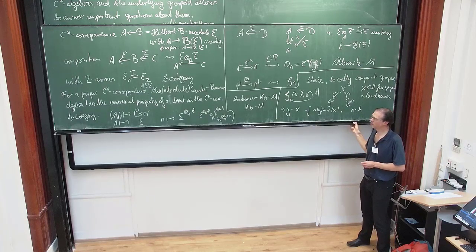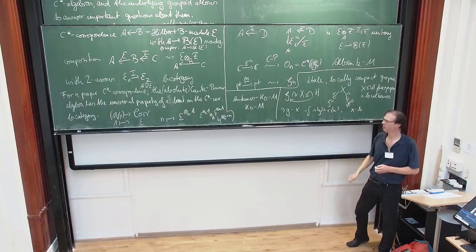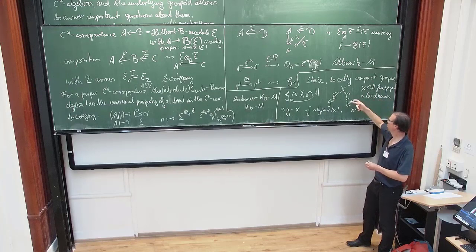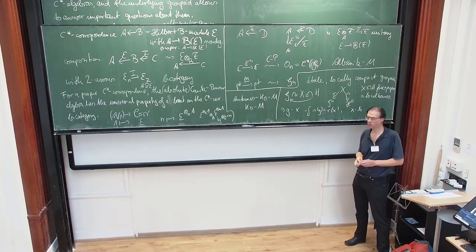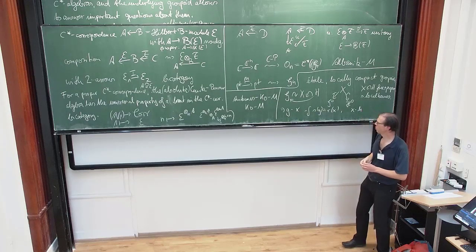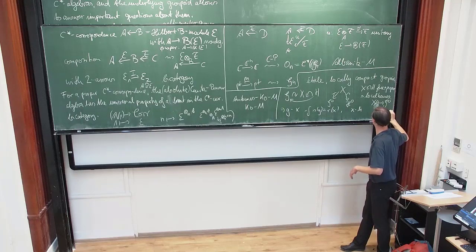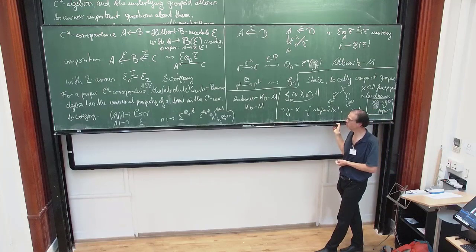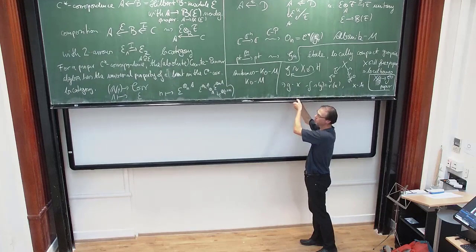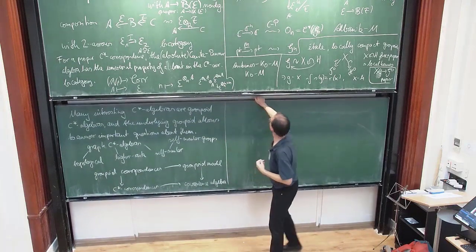If your groupoids are just spaces — trivial groupoids with only identity arrows — then these actions reduce to just having the two spaces G^0 and H^0 with the free and proper condition automatic, and there's only the condition that we have these anchor maps, range and source, where one is a local homeomorphism and the other is continuous. That's the data Katsura uses to define topological graphs. There is also a condition I call proper, which means that the range map induces a proper map from X mod H to G^0 — that map should be proper. For a topological graph, this is the condition that ensures that if you pass to a C*-correspondence, the left action is by compact operators.